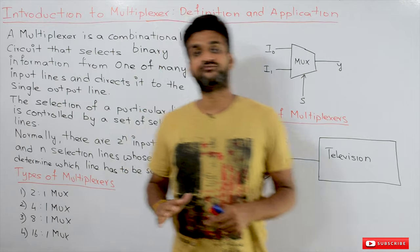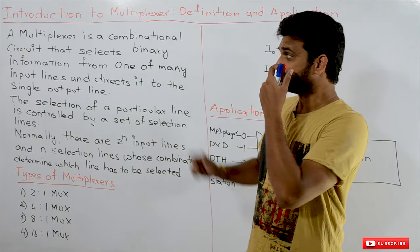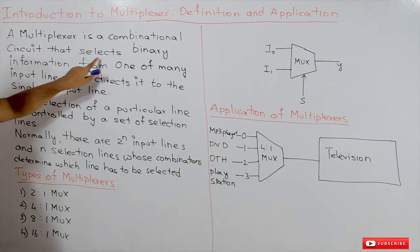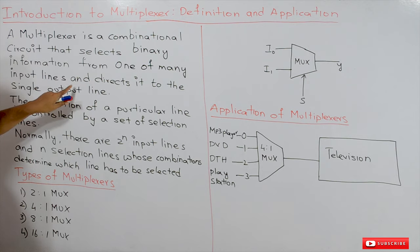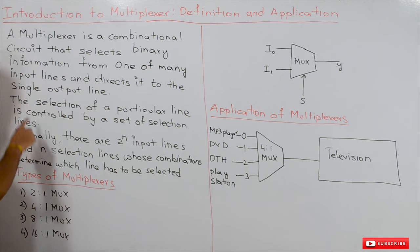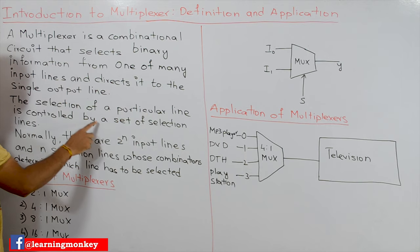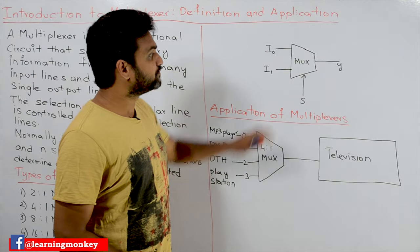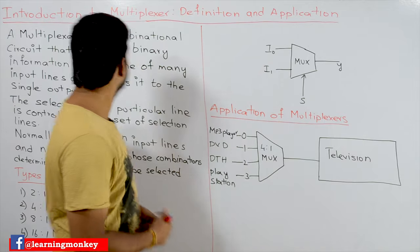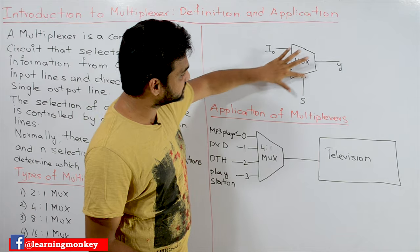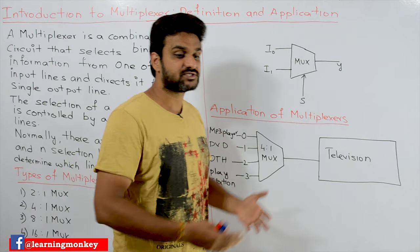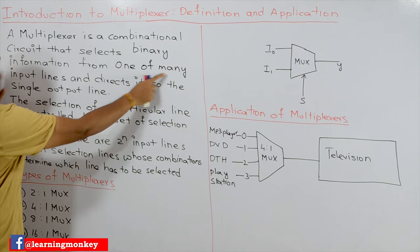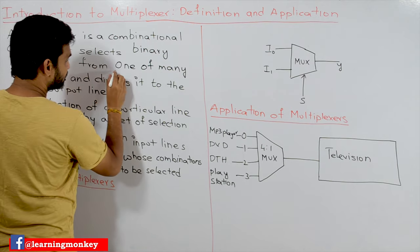Now coming to this class, we will first try to understand the definition of multiplexer. A multiplexer is a combinational circuit that selects binary information from one or more input lines and directs it to a single output line. The selection of a particular line is controlled by a set of selection lines. This is the block diagram for a multiplexer — it contains a combinational circuit that selects from one of the many input lines.